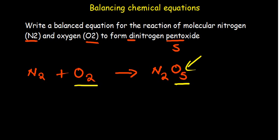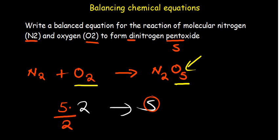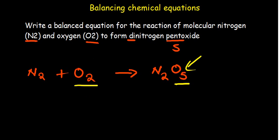We have two oxygen atoms on the left and five on the right. To balance, take the larger number — five — and place it over two as a fraction: 5/2. Multiply the O₂ by 5/2, and the twos cancel out, leaving five oxygen atoms. At this point we have two nitrogen atoms and five oxygen atoms on each side, so they are balanced.